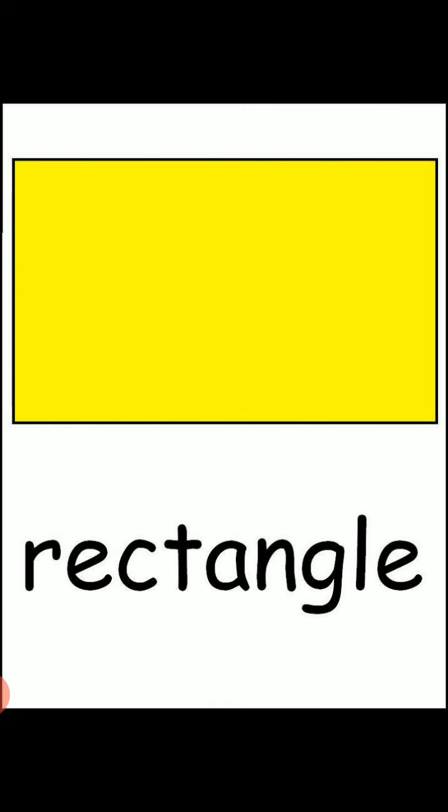Next shape is rectangle. A rectangle has four sides. In a rectangle, two opposite sides are always equal to each other — the horizontal lines have similar length and the vertical lines have the same length. Next shape is square. A square always has four sides, and all four sides are always equal to each other.